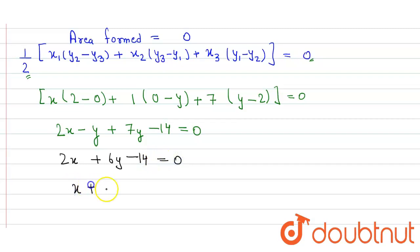On dividing it by 2, we get x plus 3y minus 7 is equal to zero and that's the relation between x and y and that's our answer.